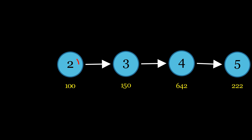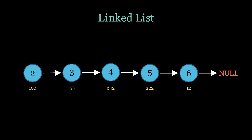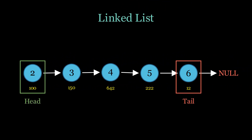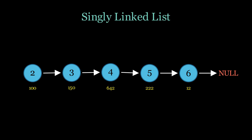Each node in a linked list contains the data and a pointer or reference to the next node. This reference is simply the memory address of the next node. The first node is known as the head node and the last node as the tail node. This specific type is known as a singly linked list because there is only one pointer per node. We will explore other types of linked lists later in the video.